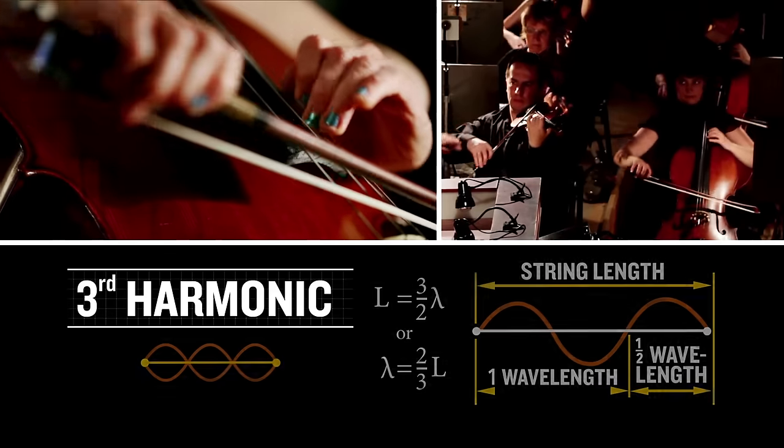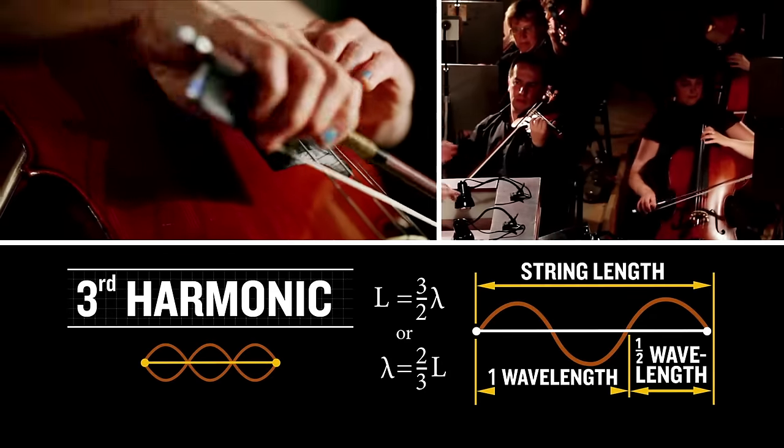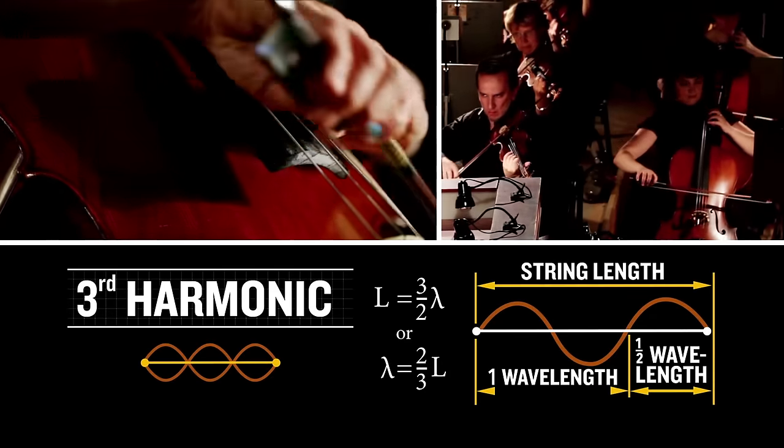The third harmonic is produced by compressing the string such that the length of the string equals one-and-a-half wavelengths.